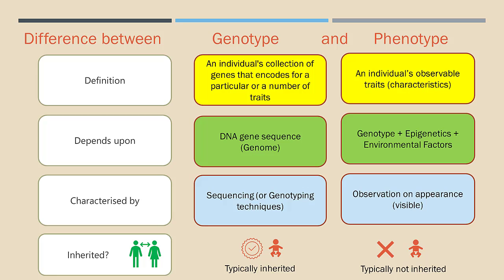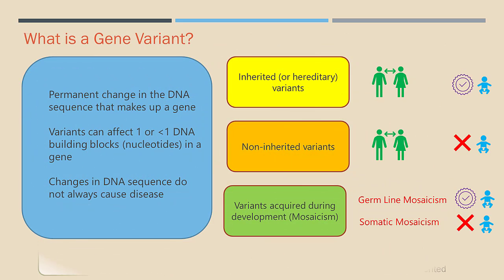On the other hand, phenotype is dependent upon the genotype, epigenetics, plus environmental factors, and phenotype is typically not inherited. We may ask: what is then a gene variant? It refers to the permanent change in the DNA sequence that otherwise makes up a gene. Variants can affect one or more nucleotides but might not always cause disease due to codon usage, which encodes for the respective amino acid when the DNA sequence is translated.